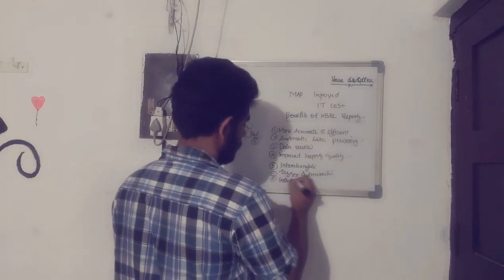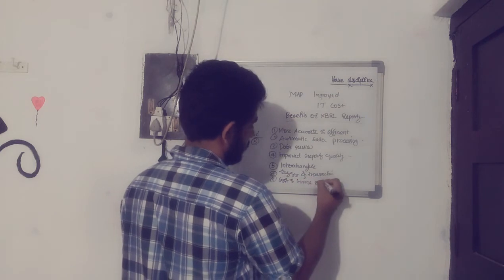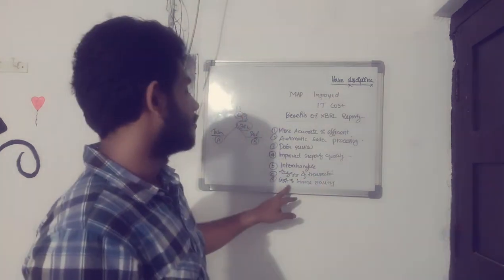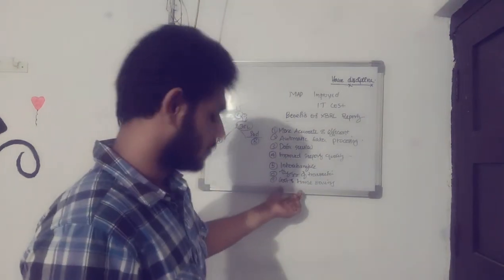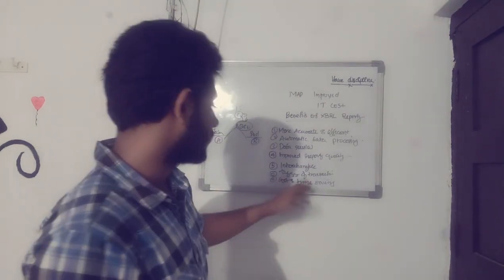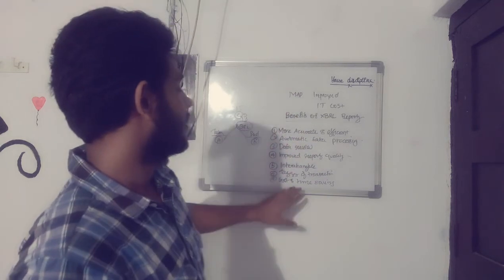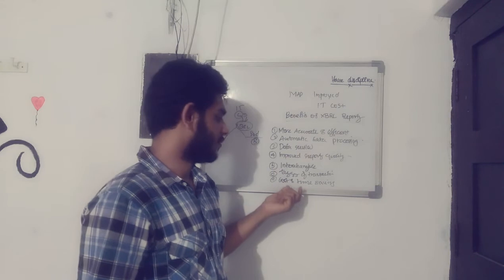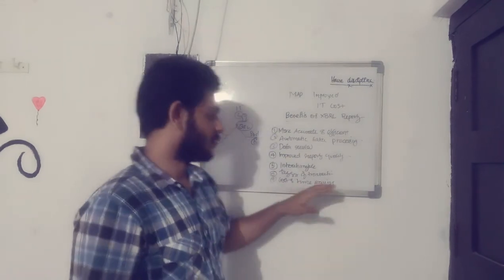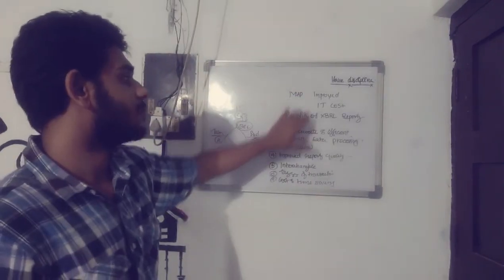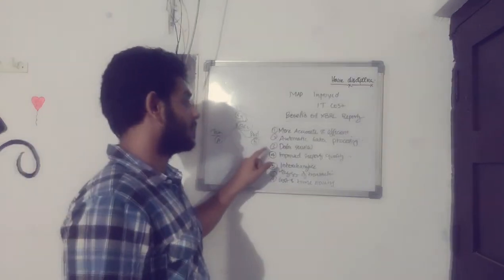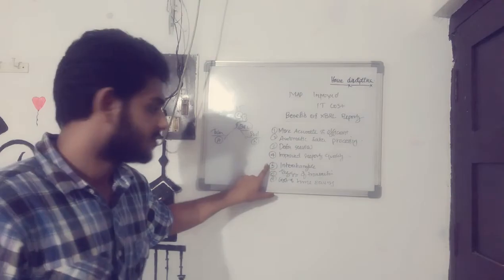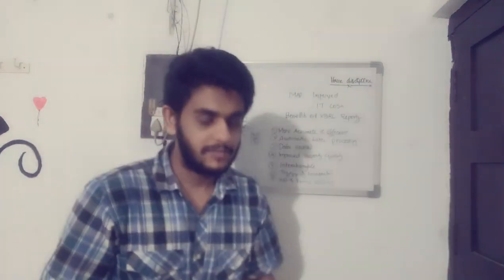The seventh benefit is cost and time savings. Compared to other technologies, the cost of storing, receiving, processing, and auditing XBRL-related data is much more cost-effective and time-saving. So to summarize the mnemonic: More accurate and efficient, Automated data processing, Data review, Improved reporting quality, Interchangeable, Tagging of transactions, and Cost and time saving.